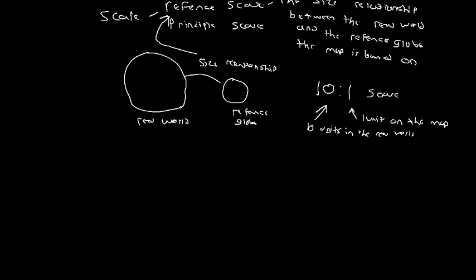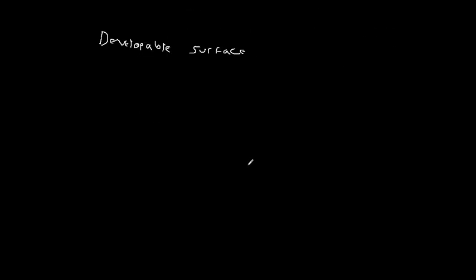So, once we've figured out what size we're going for, once we've created this reference globe at the scale that we want, the next thing we have to do is we have to create what's called a developable surface. Now, you'll often hear this idea of developable surface as talking about, again, taking a piece of paper and wrapping it around a globe.